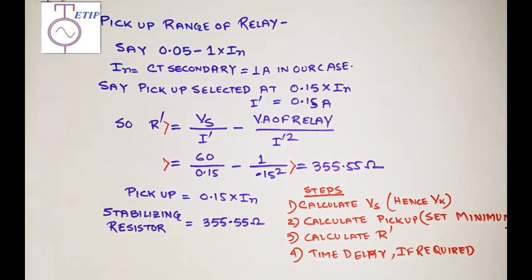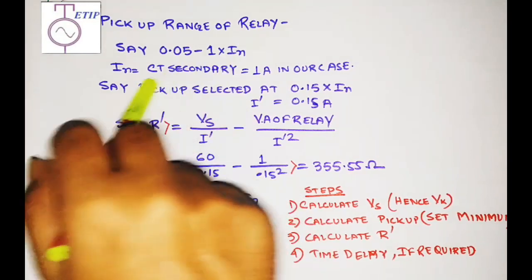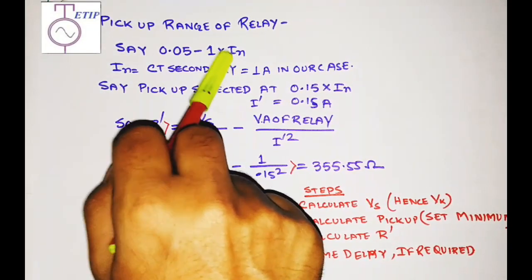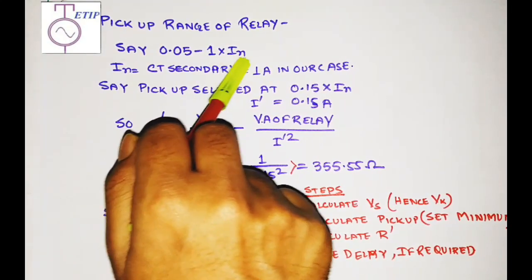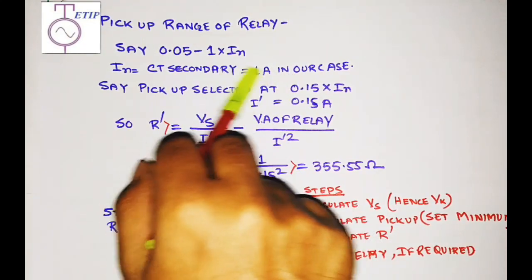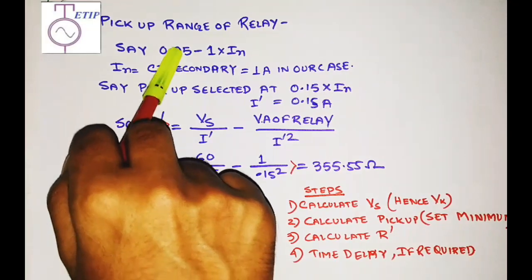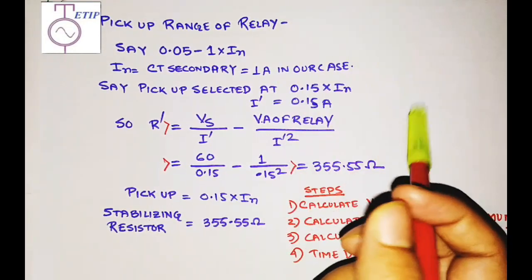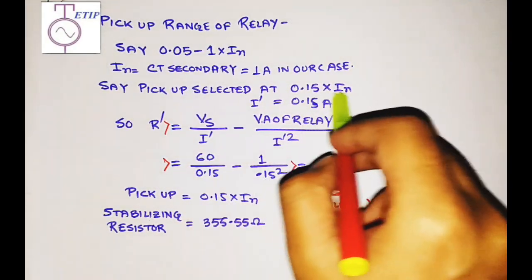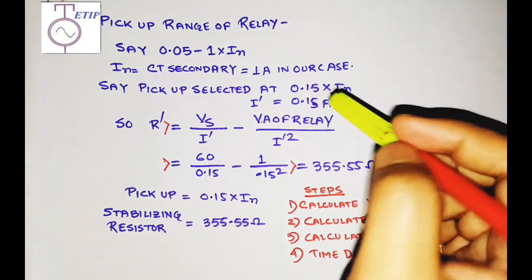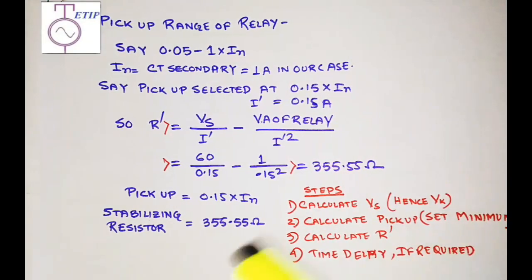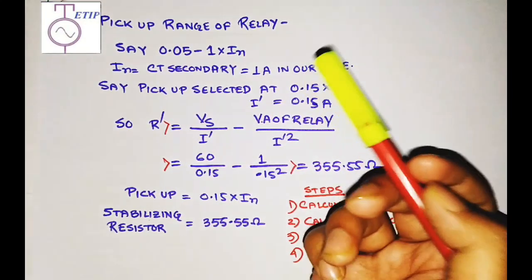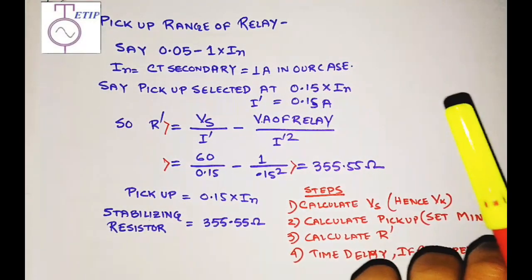The relay has a pickup range of 0.05 to 1 × In — note that In is the CT secondary rating, which in our case is 1 ampere. Suppose I select the pickup as 0.15 × In; then the relay pickup current I' = 0.15 A secondary. The corresponding primary pickup current will be 0.15 × 4000 = 600 A. That means if 0.15 A flows through the relay coil via the CT secondary, the relay will pick up.